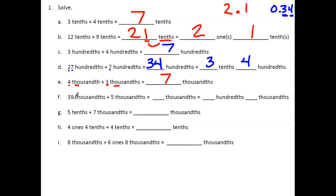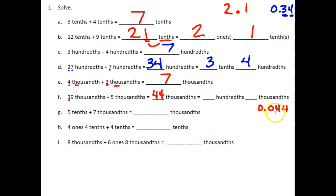Now we need to regroup: 39 thousandths plus 5 thousandths. Counting up 5 more from 39: 40, 41, 42, 43, 44 thousandths. Or, 9 thousandths plus 5 thousandths is 14 thousandths, plus 30 thousandths remaining is 44 thousandths. So 44 thousandths looks like 0.044 — a 4 in the hundredths and a 4 in the thousandths.